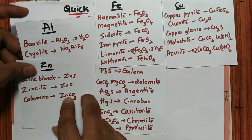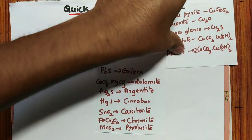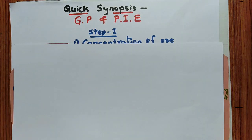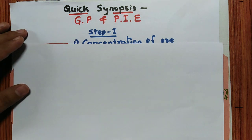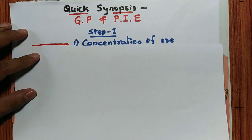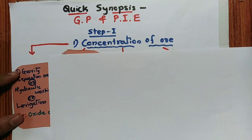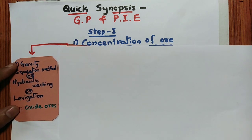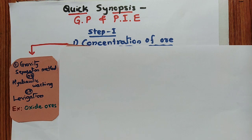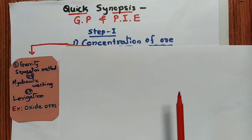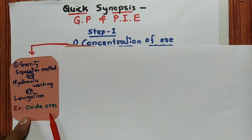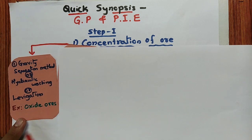Continuing with the synopsis. In metallurgy, step one is concentration of the ore. The first method is gravity separation, also called hydraulic washing or levigation. In all these methods, remember the examples — any oxide ores can be used. So gravity separation or hydraulic washing or levigation is used for oxide ores.